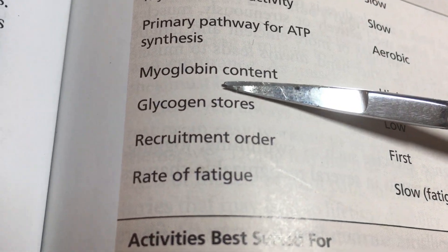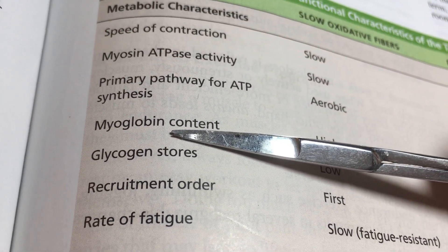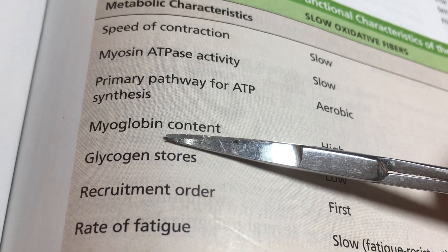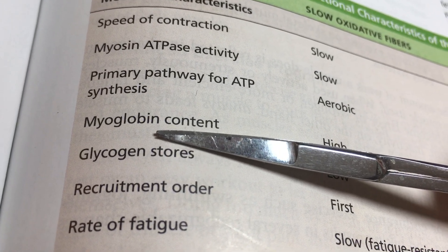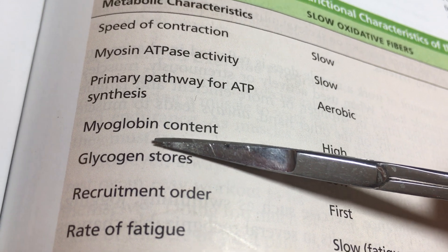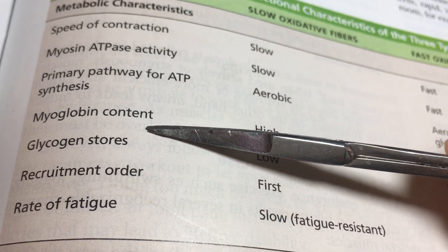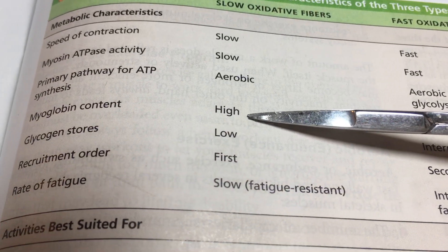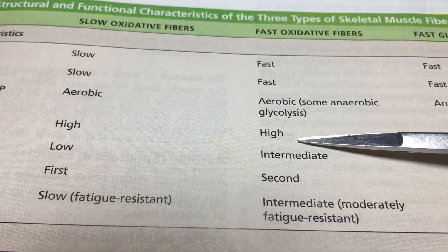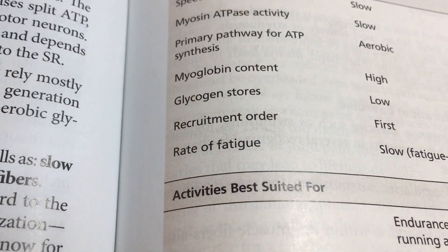Myoglobin is essentially hemoglobin as a single molecule, carrying oxygen within the muscle cell. Unlike hemoglobin, which is a four-part molecule, myoglobin is a one-part molecule. It is also highly conserved across species — the myoglobin of a human is essentially the same sequence as that of a whale. Slow oxidative fibers have lots of myoglobin because they rely on aerobic metabolism, while fast glycolytic fibers have low myoglobin content.